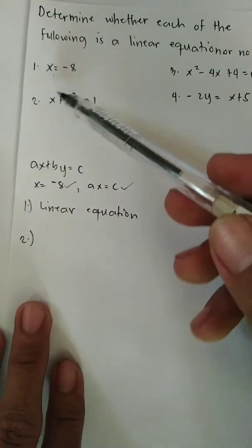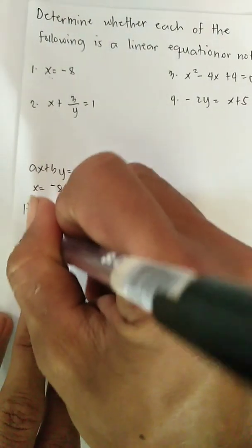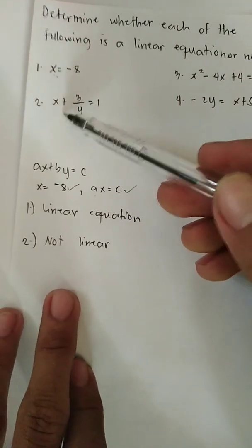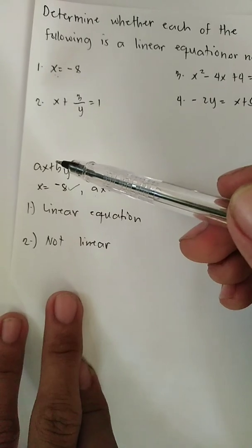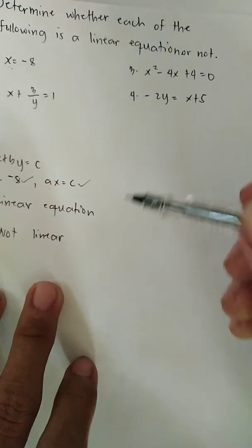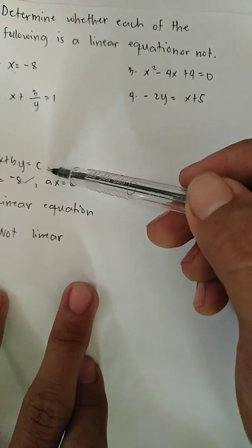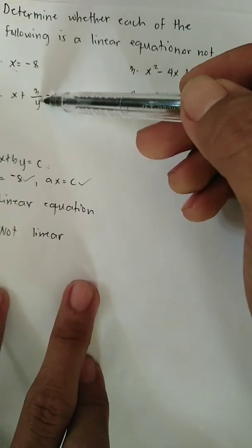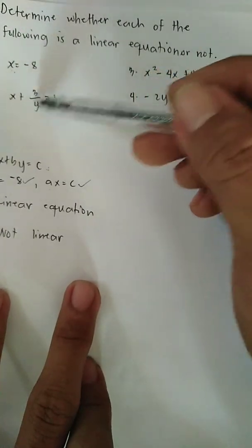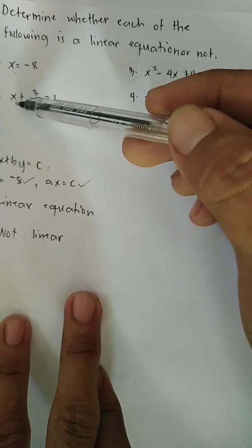For number 2, is X plus 3Y over Y equals 1 a linear equation? The answer is not a linear equation. The definition states an equation must be writable in the form AX plus BY equals C. But here, our second variable Y is in the denominator. If you simplify this, X and Y will be expressed as their product.